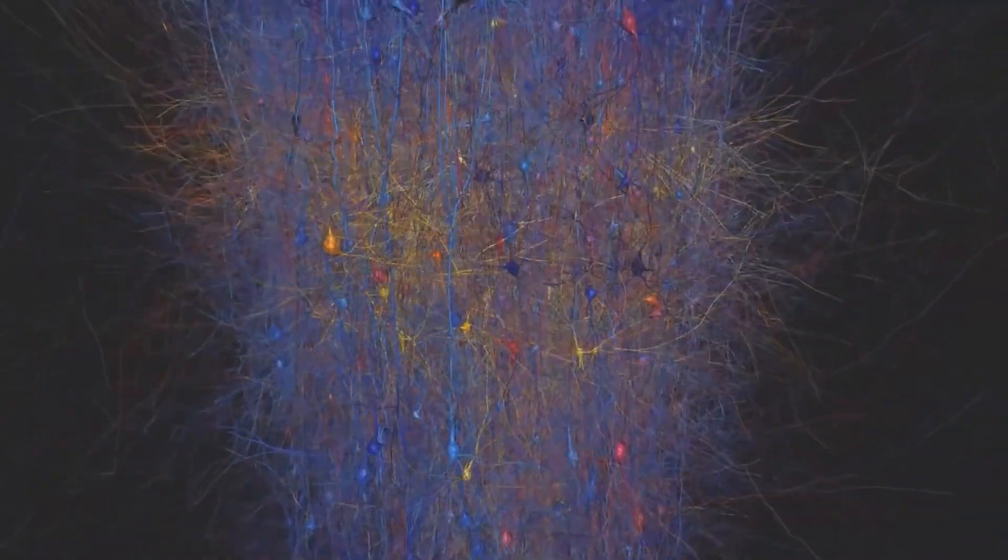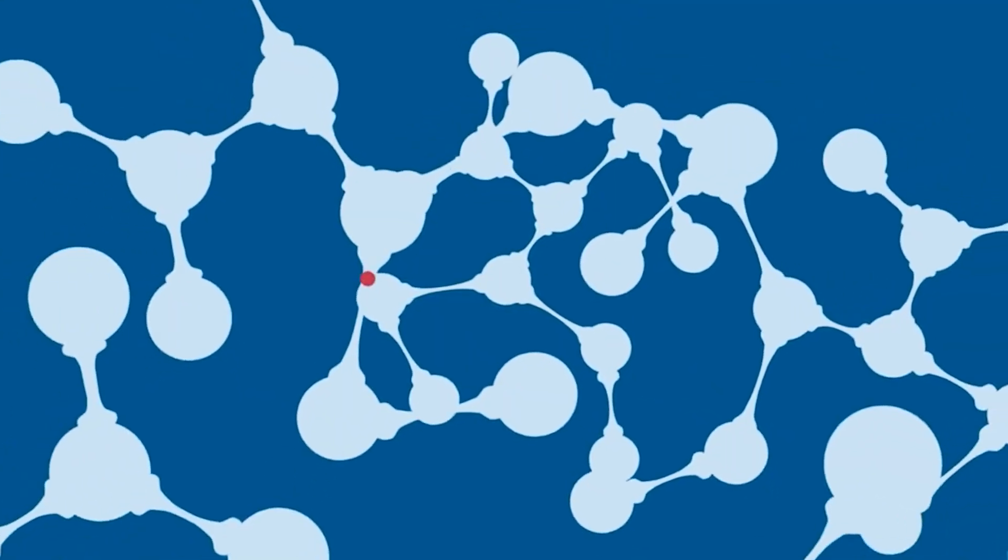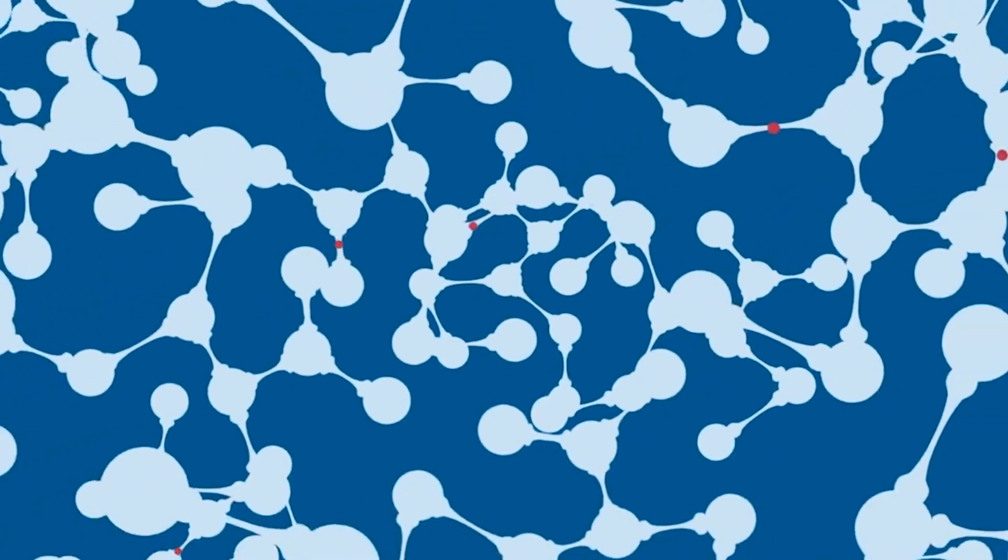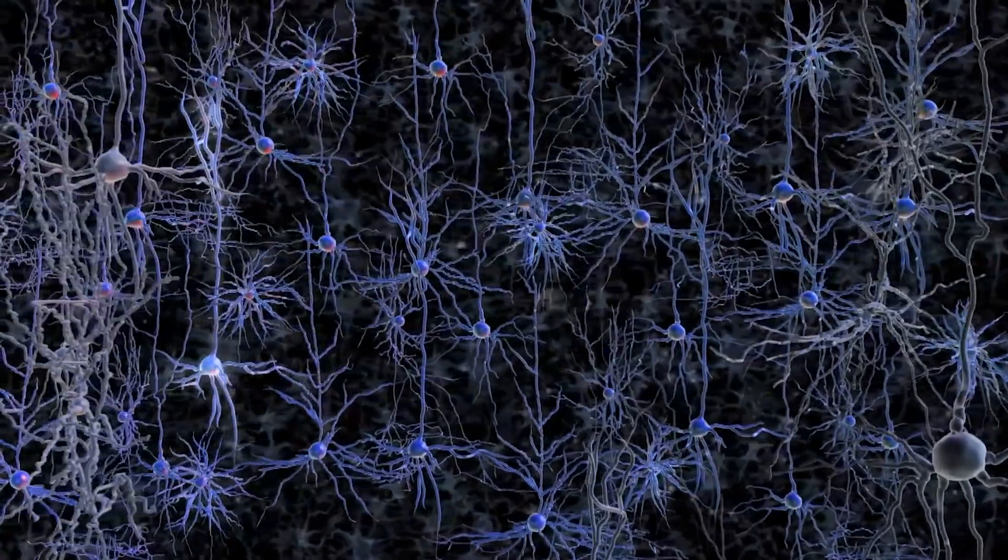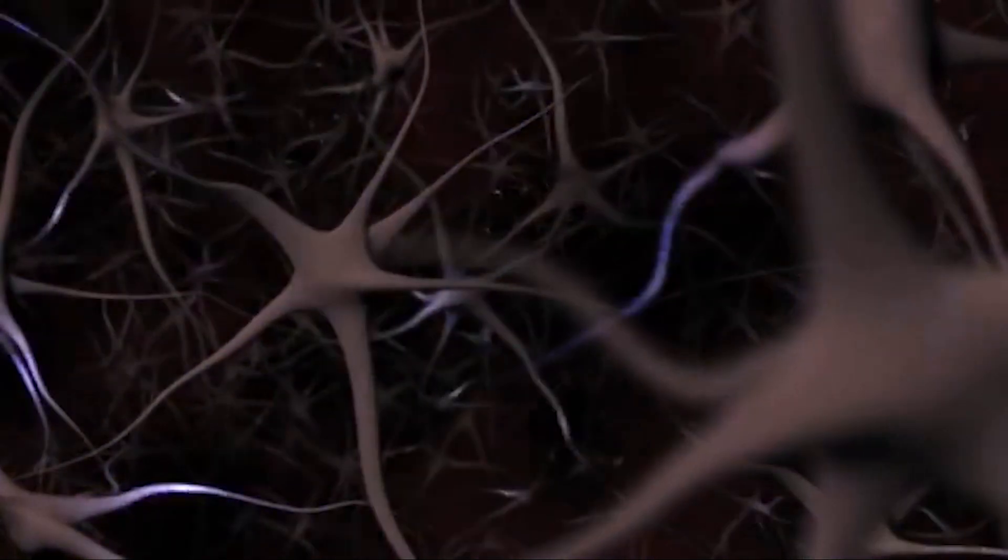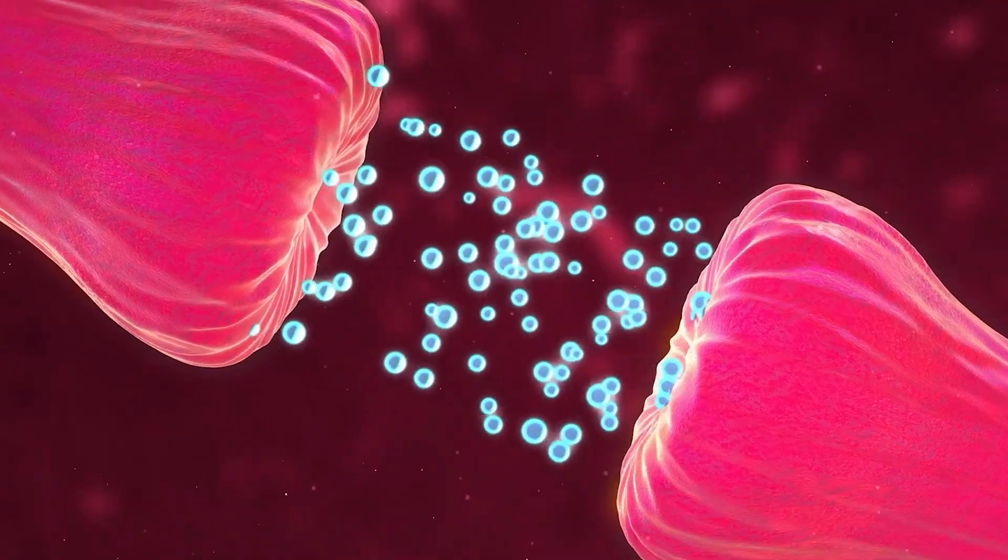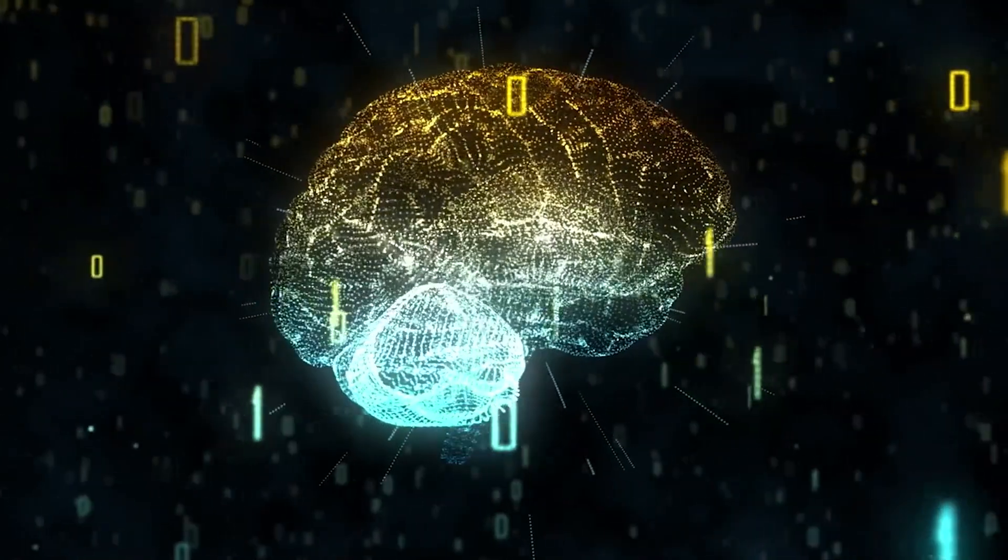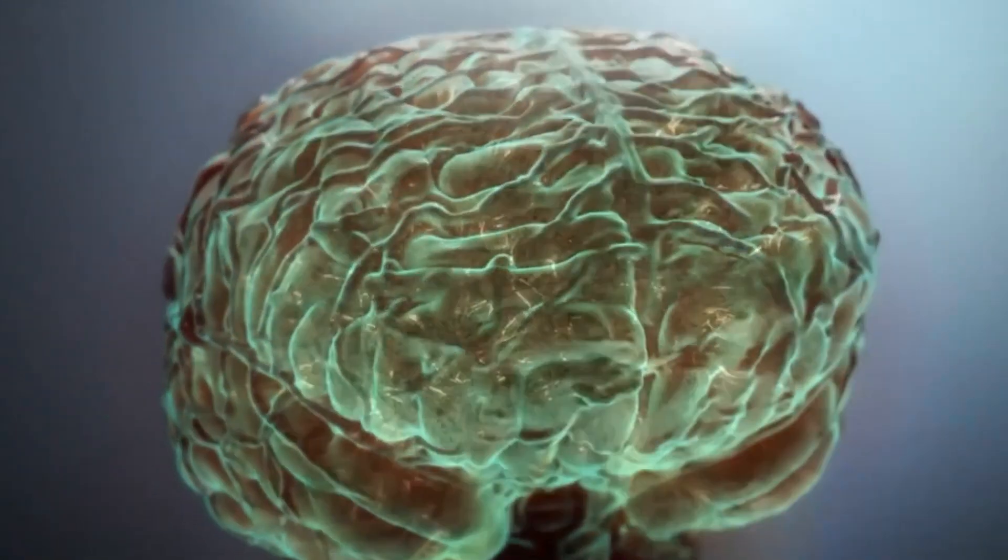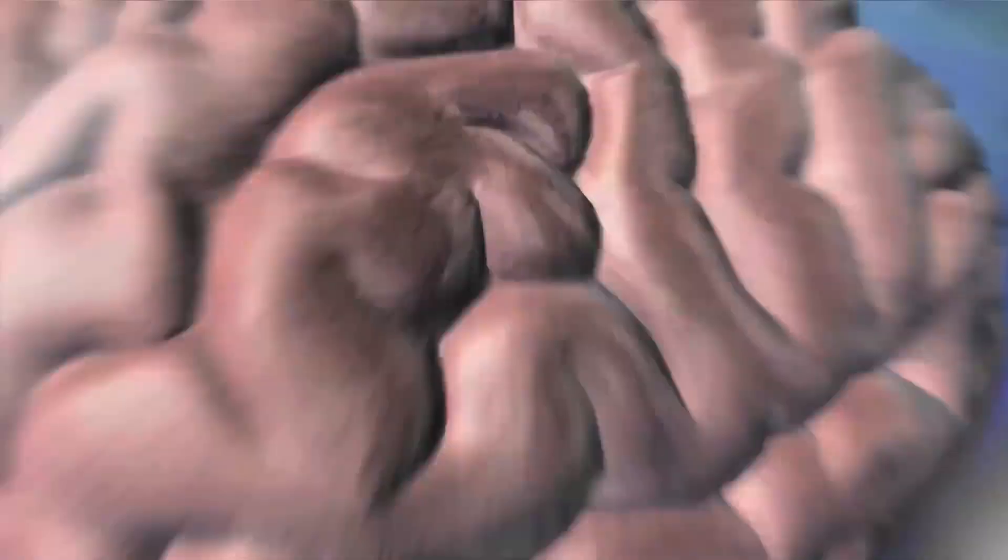Then there's the issue of complexity. The human brain is the most complex organ in the known universe. The interactions between neurons, the way they fire, the role of neurotransmitters, the influence of genetics and environment—all these elements and more come together in an intricate dance of unimaginable complexity. To simulate this dance is to attempt to reproduce the most complicated piece of organic machinery we've ever encountered.